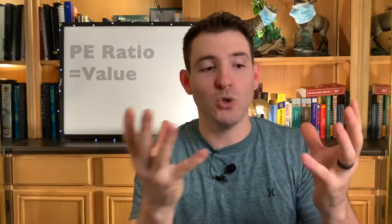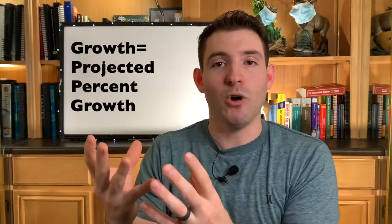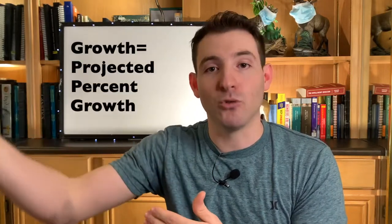So first, what does PEG even stand for? PEG stands for Price-to-Earnings to Growth ratio, which is basically an extension of the PE ratio. Now if you're not sure what a PE ratio is, that's okay — I'll leave a tag up above and a link in the description below to one of my videos that explains the PE ratio. The PE ratio in short is basically the value of the company, and the growth is the EPS projected growth in percentage form of that company you are looking at. So what you are doing is taking the value of the company and comparing it to the growth of the company.